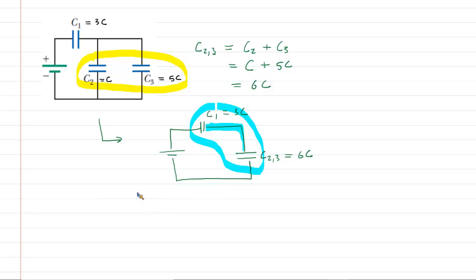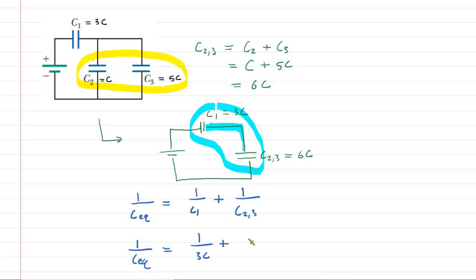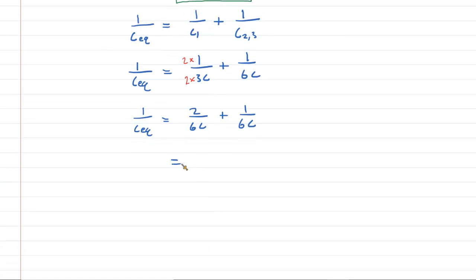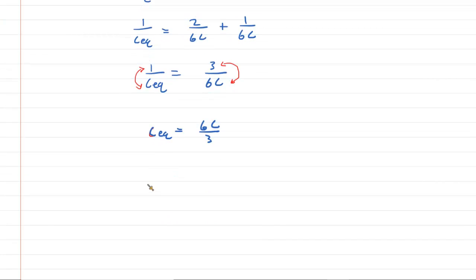To get the equivalent capacitance for these two capacitors in series, we say: 1 over CEQ equals 1 over C1 plus 1 over C2,3. Plugging in values: 1 over 3C plus 1 over 6C. Finding a common denominator gives us 2 over 6C plus 1 over 6C, which equals 3 over 6C. Flipping both sides, CEQ equals 6C divided by 3, which simplifies to 2C.